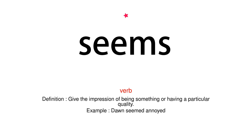Seems. Verb. Definition: Give the impression of being something or having a particular quality. Example: Don seemed annoyed.